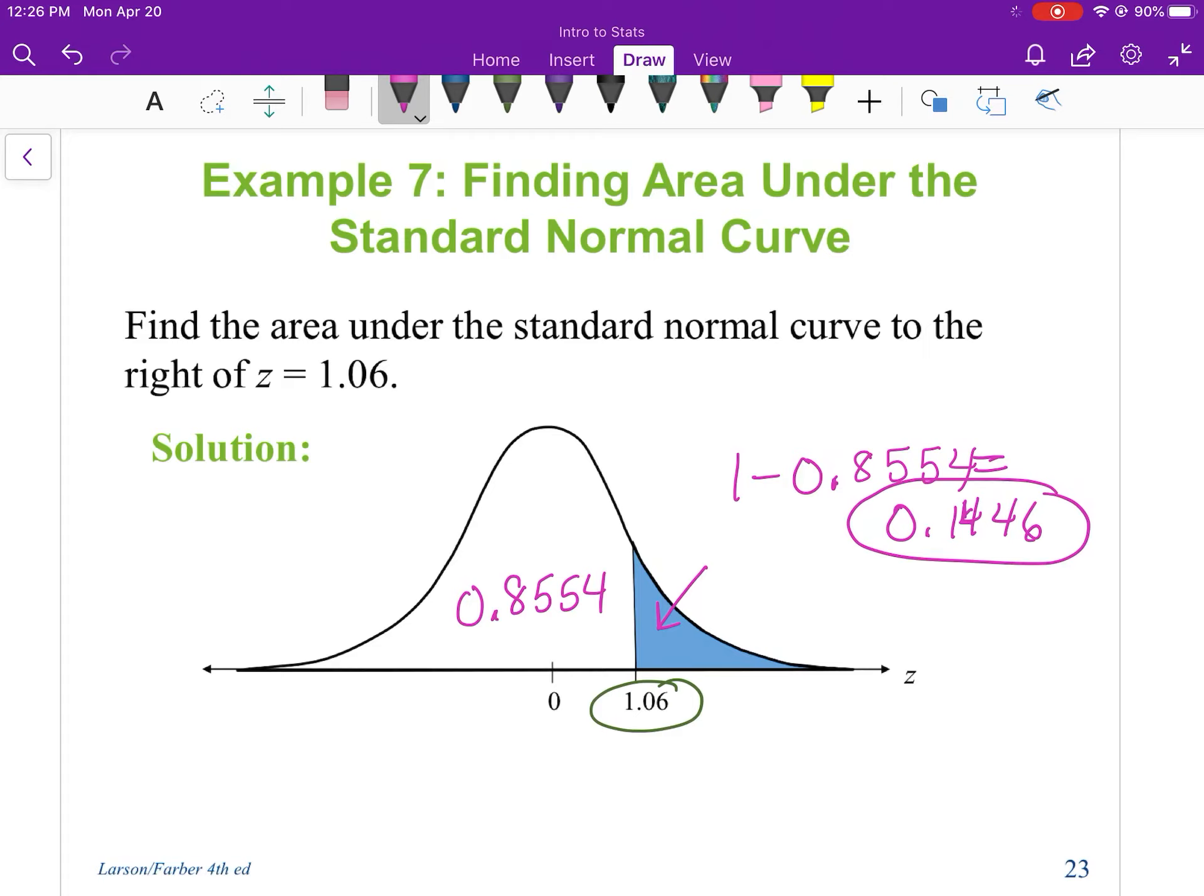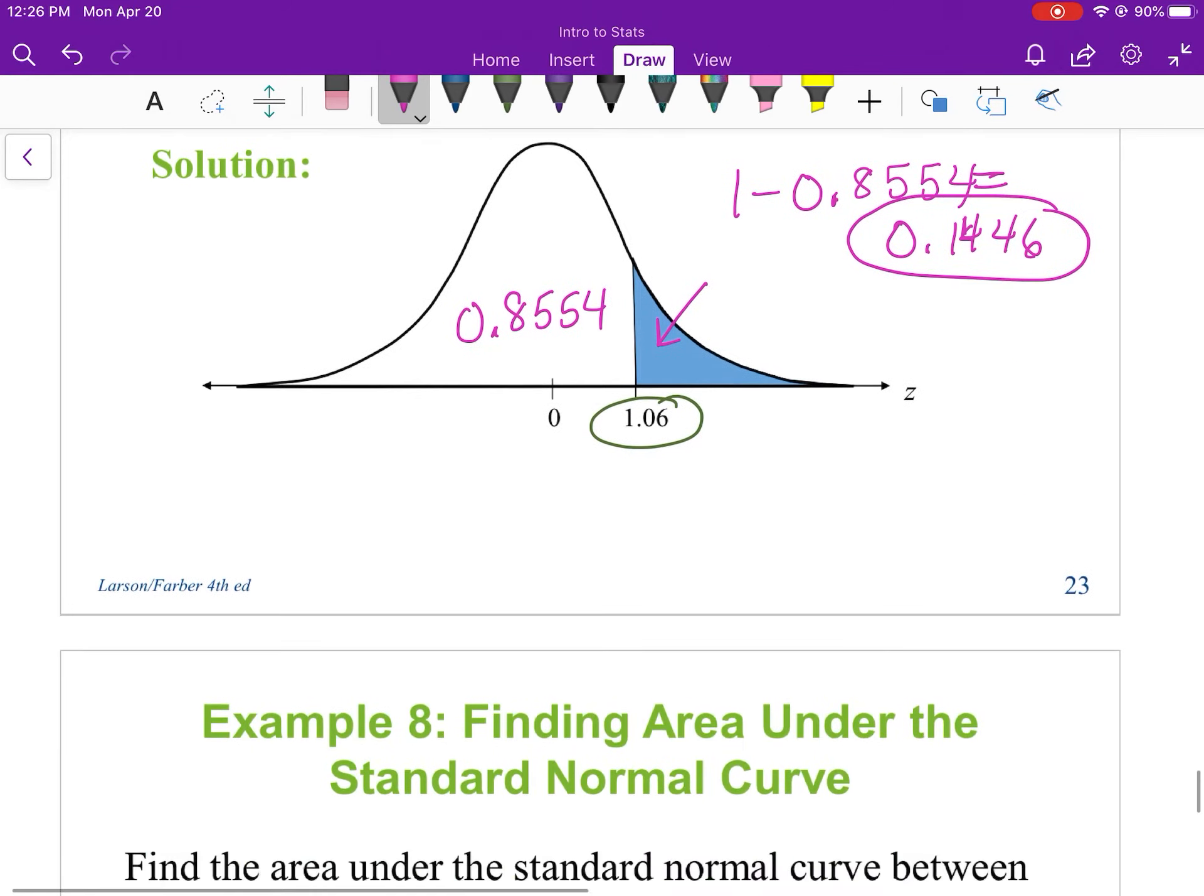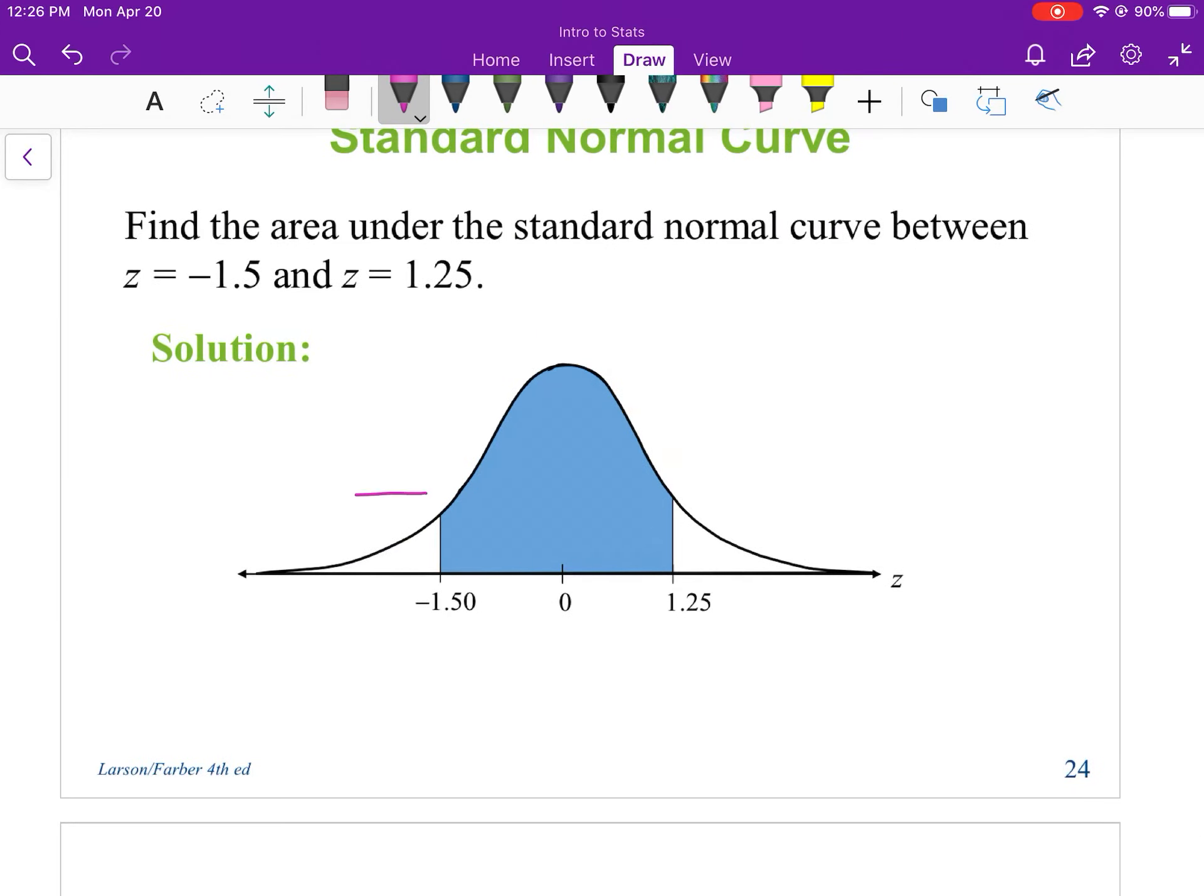All right, if I want to go in between, first I'm going to find this one, the area here, and the area for negative 1.5 should be 0.0668. And then I'm going to find the area here for 1.25 and that's 0.8944. And then if I just subtract those, I'll have the area in between.